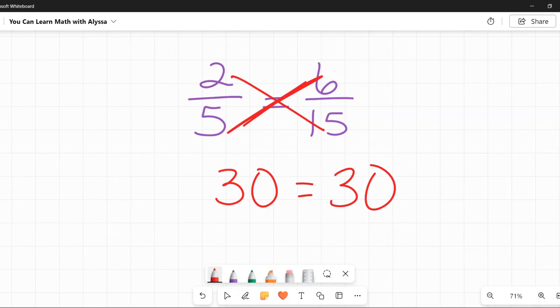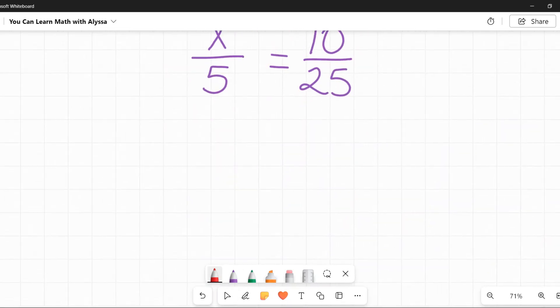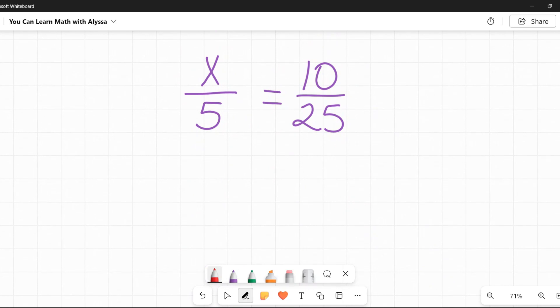This is always true for equal fractions. We can use this property to solve equations to solve for x. So in this case, I have two fractions that are equal to each other, so I can cross multiply and say that those products are also equal to each other.